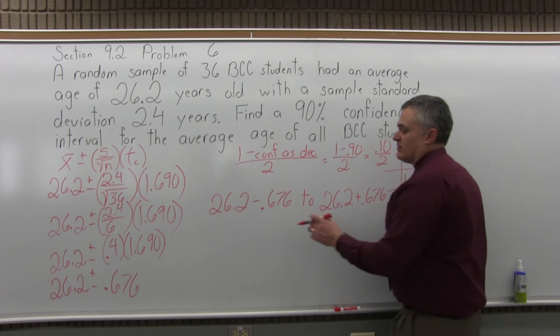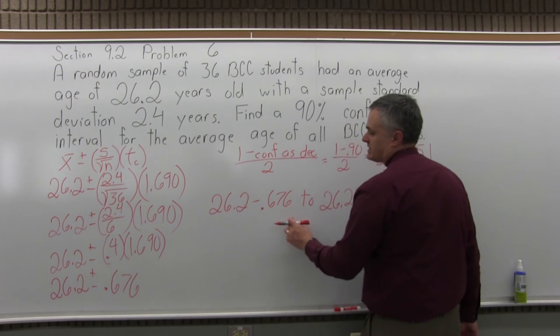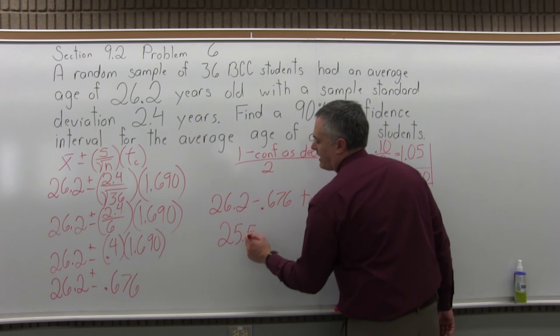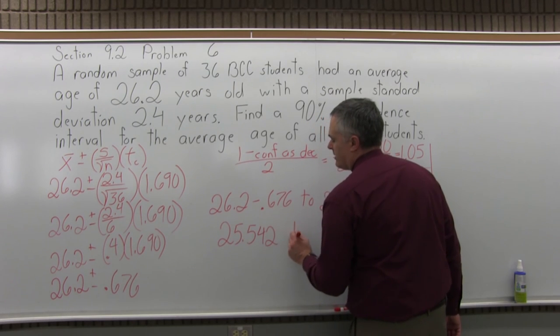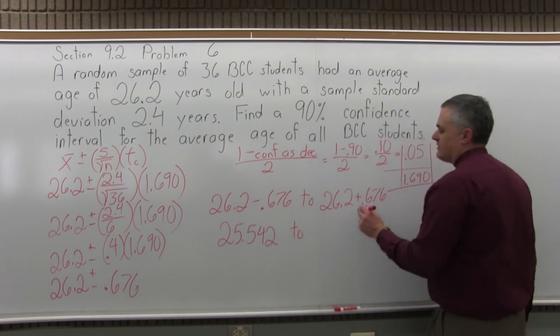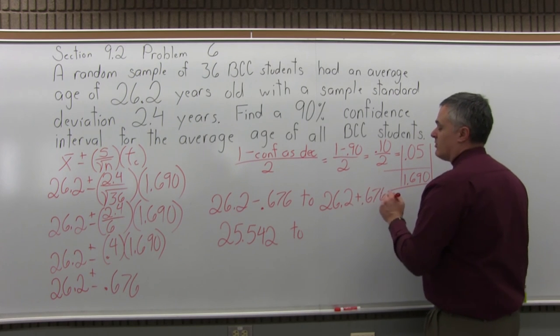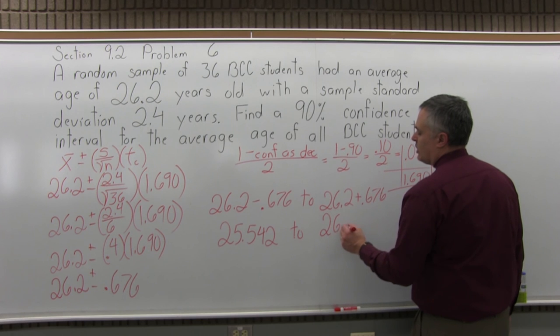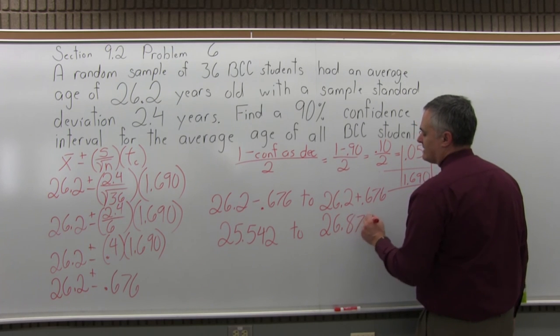And then you just do the math. So the low end, 26.2 minus .676, will be 25.542. And the upper end, if I add 26.2 plus .676, will be 26.876.